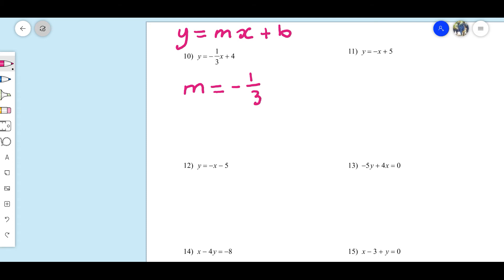And we're done with that one. We can quickly do number 11. M is equal to negative one. Negative one is a slope. And that's the same as negative one divided by one.